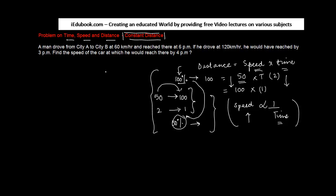Let's come back to the question in hand. A man drove from city A to city B at 60 kilometers an hour and reached there at 6 pm. So he drove from this place to this place at 60 kilometers and reached there at 6 pm.